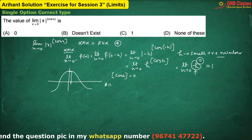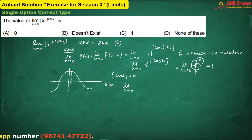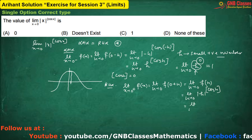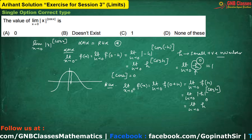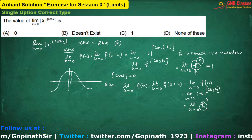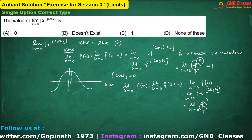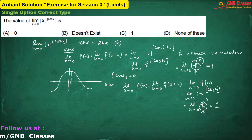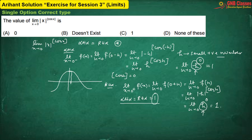Now let us check the right-hand limit. It will be mod of h to the power floor of cos h. With the same reason, mod of h can be written as h only, and the power will be exactly equals to 0. As I told you, h is not equals to 0 — otherwise it would have been 0 to the power 0, which is an indeterminate form. But since it is a limit, h is not exactly equals to 0, so it is some positive value to the power 0, which will be 1. Therefore left-hand limit equals right-hand limit equals 1. Hence the limit exists and the value of the limit is 1. Hence option C is correct.